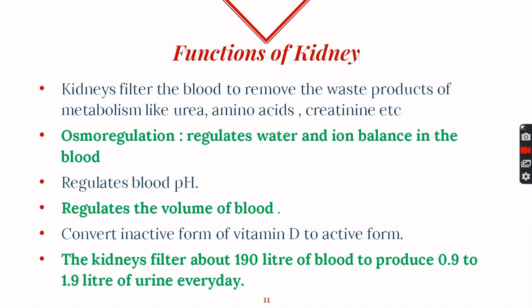Functions of the kidneys include removing waste products of metabolism such as urea, amino acids, and creatinine. Excess amino acids — the simplest form of proteins — are also removed. Kidneys perform osmoregulation, regulating the amount of water and ions, regulating blood pH, regulating the volume of blood, and converting the inactive form of vitamin D to its active form.